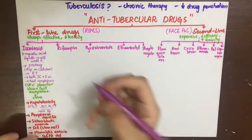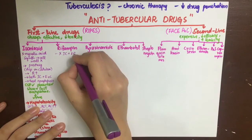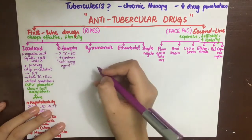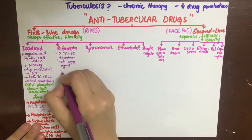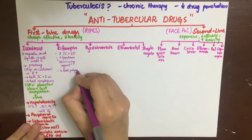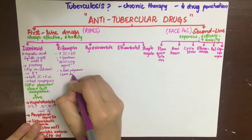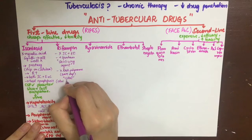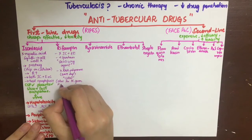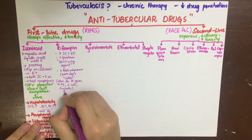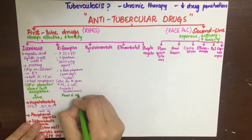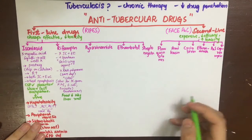Rifampin (rifampicin) is also known as a sterilizing agent because it acts on both intracellular and extracellular bacteria, including those in caseous necrosis. It acts by inhibiting DNA-dependent RNA polymerase, thus inhibiting RNA synthesis. It is bactericidal for Mycobacterium tuberculosis, gonococcus, H. influenzae, Staph aureus, E. coli, and Pseudomonas. Food decreases its absorption; it is metabolized in the liver by acetylation, with the soluble form excreted in urine and the unmetabolized form excreted in bile undergoing enterohepatic recycling.